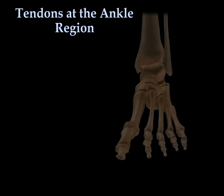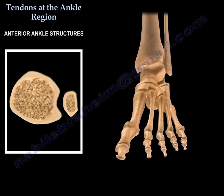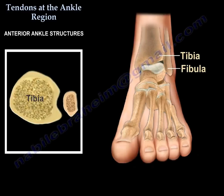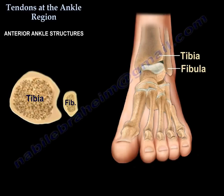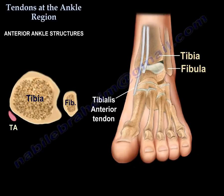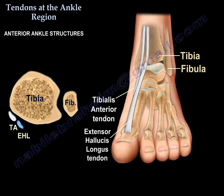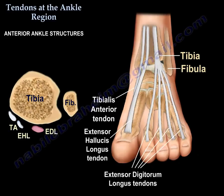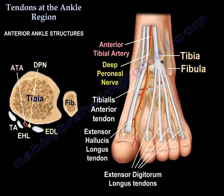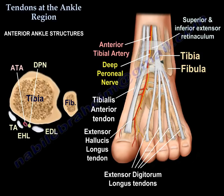Tendons at the ankle region. Tendons in front of the ankle, or tendons in the anterior compartment of the ankle, are the tibialis anterior, the extensor hallucis longus, and the extensor digitorum longus. Here you can also see the anterior tibial artery and the deep peroneal nerve, as well as the superior and inferior extensor retinaculum.